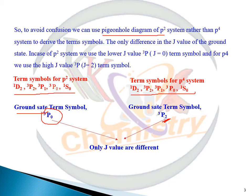So here the only difference is in the J value. It means that for P² system and P⁴ system the term symbols are equivalent, the same one, but only the difference is in the ground state.